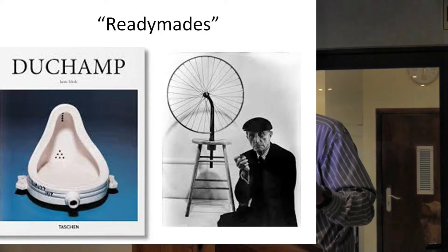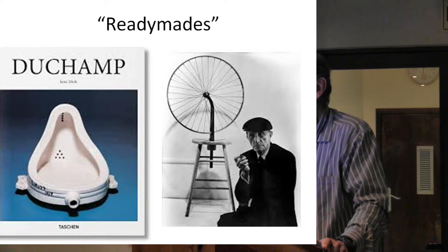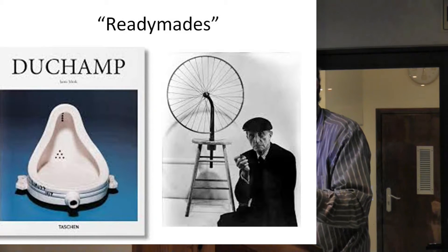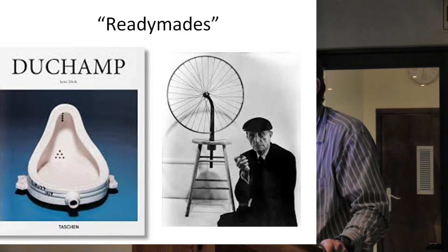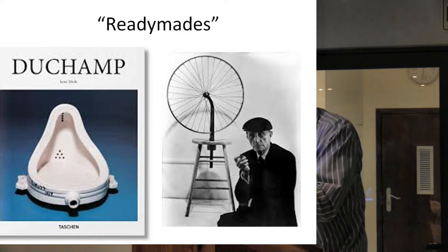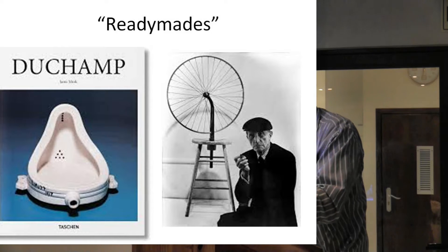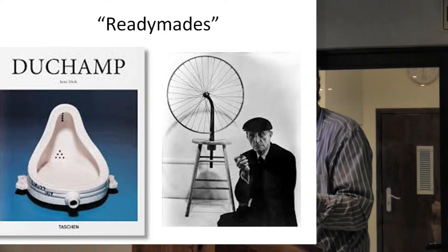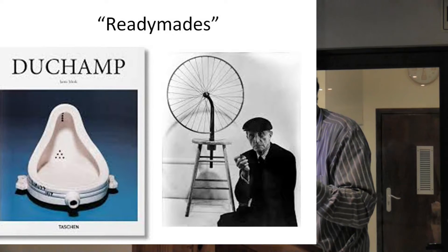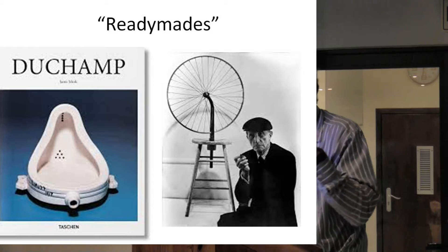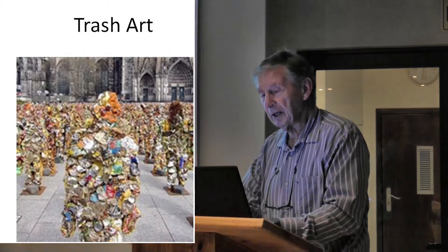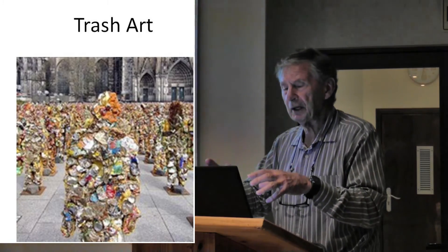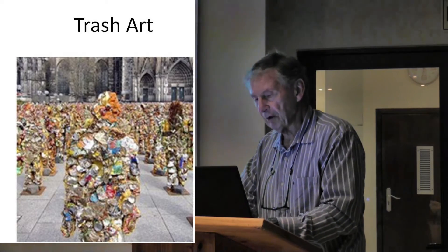The ready-mades were things like this: a man's urinal on the left-hand side, and on the right he took a chair and put a bicycle wheel on it and fixed it like that — that's what he had as ready-made. It's just weird. So he was more into sculpture than anything else. Also trash art, where they just took bits and pieces of everything and made an art form out of it.